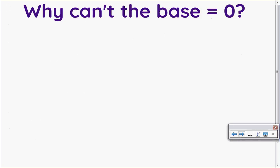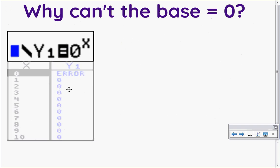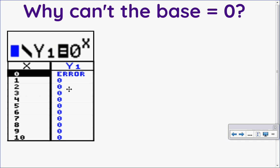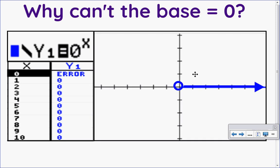Why can't the base be zero? Imagine if I had zero to the exponent of x. If I plugged in all sorts of values of x I would just get zero, with the exception of zero to the power of zero, which is undefined — it is an error. Zero to any positive power gives a y value of zero, so graphing that would produce a horizontal line, not an exponential graph — it's actually a linear graph.